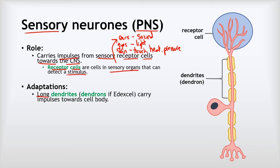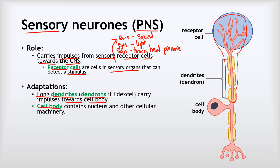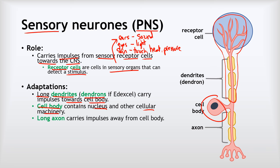First, they have a long structure called dendrites — or, in Edexcel's terminology, a dendron. This long dendrite starts with the feathery parts and goes all the way down towards the cell body, carrying information from the receptor cells towards the cell body. The cell body is the round blobby section containing the nucleus and other cellular machinery. The impulse doesn't actually pass through the cell body because it sits off to one side. As well as the long dendrite, we have a long axon, which carries the impulses away from the cell body.